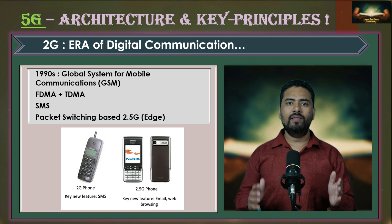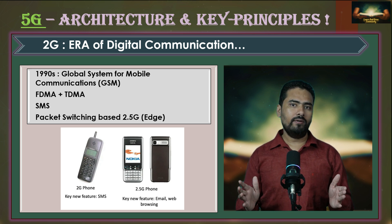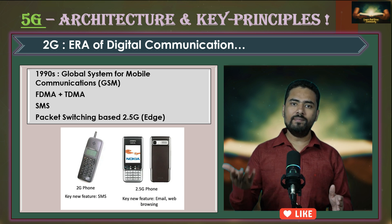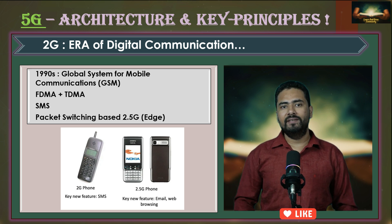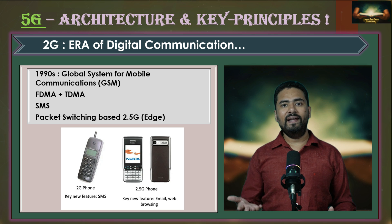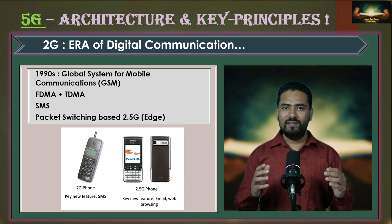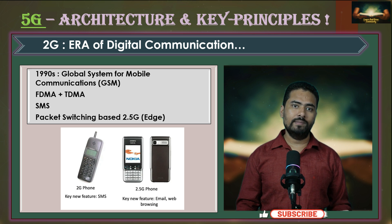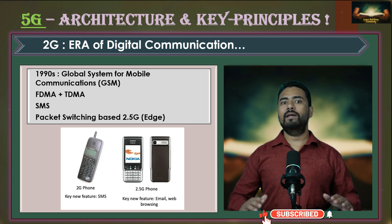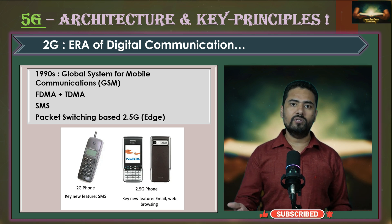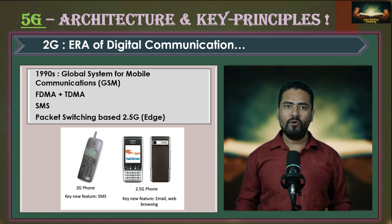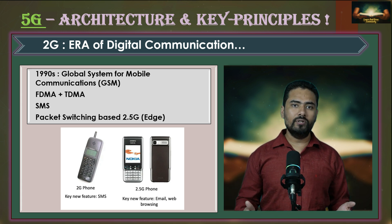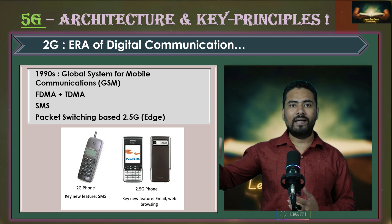In 1987, 13 European countries agreed to create a common cellular telephone system across Europe, which refers to the GSM specifications from ETSI. GSM was commercially launched in Finland in 1991. GSM was using TDMA and FDMA-based multiple access technologies, and because of this advancement it allowed more users to be served from the same resources. TDMA, or Time Division Multiple Access, is the concept where different users share the same frequency resource but at different time slots.